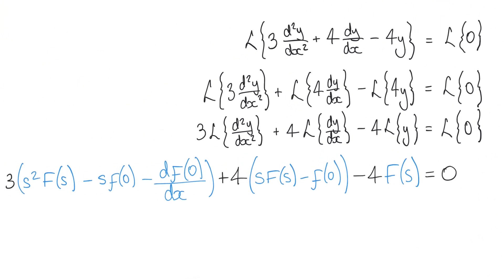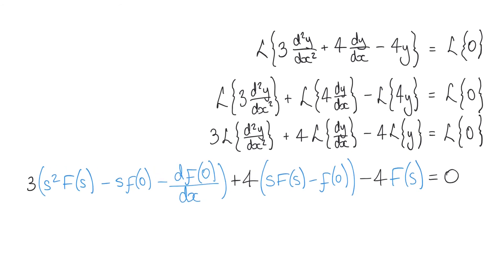Putting it all together, not forgetting those coefficients we pulled outside, we have 3(s²F(s) - sF(0) - dF(0)/dx). The Laplace transform of 0 is just 0, so that's all equal to 0. We use capital F to represent the function in the s domain, and small letter f to represent the function in our time domain, which becomes relevant in just a moment.